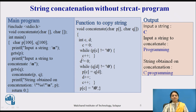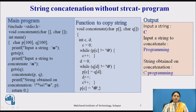Next, the counter for the second string is initialized: d is equal to 0. Then, while q[d] is not equal to null, we add each character of q into the array of the first string p. At the null character of the first string, the second string starts being appended. We increment both d and c until null is reached.